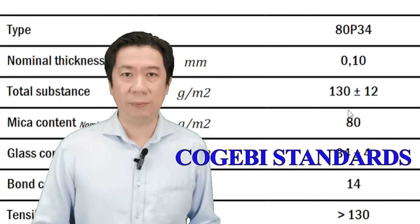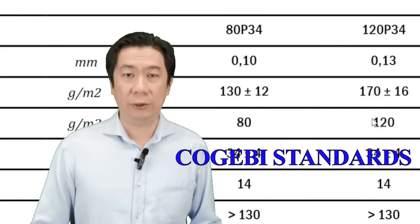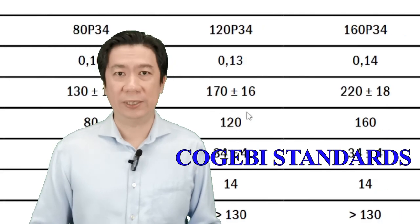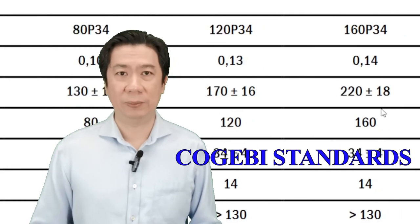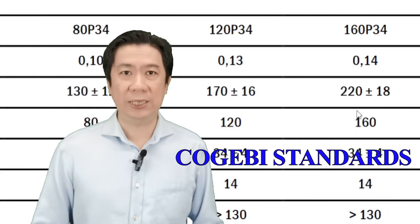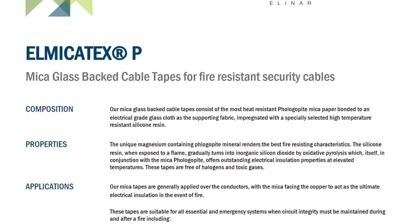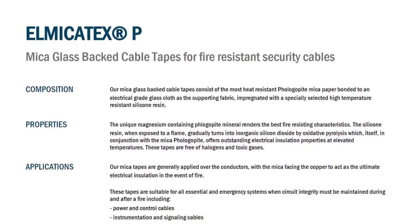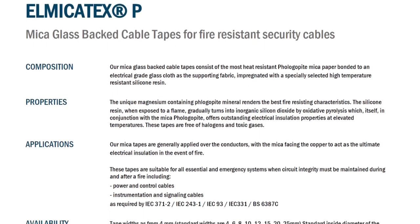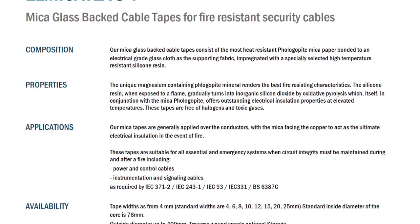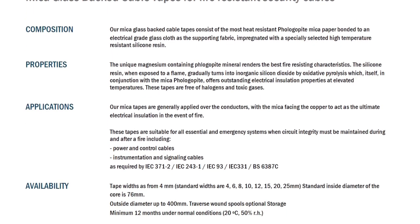Mica paper of densities 80 grams per meter square, 120 grams per meter square, and 160 grams per meter square — these are the important properties that you should be looking for when you decide on the type of mica tapes to use.